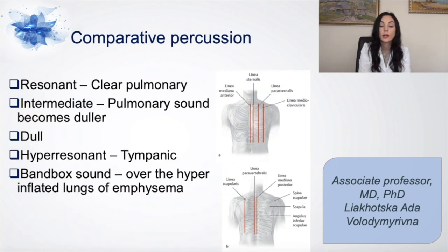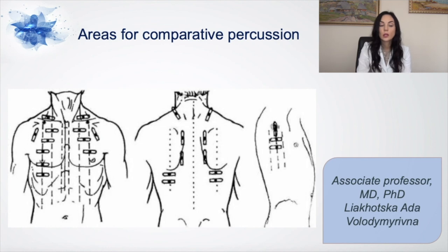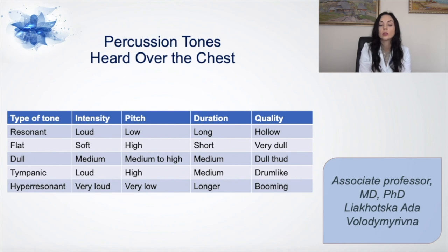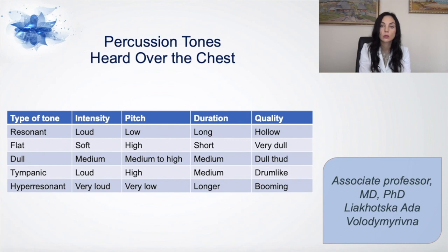Comparative percussion sounds: resonant clear pulmonary sound, intermediate pulmonary sound — somewhat duller — dull sound, and hyper-resonant tympanical sound — a band-box sound over the hyperinflated lungs of emphysema. Please look at the areas for comparative percussion and how to place your finger and knock. Percussion tones heard over the chest should be characterized by their intensity, pitch, duration, and quality. Resonant type: loud, low-pitched, long duration, hollow quality. Flat type: soft intensity, high pitch, short duration, very dull. Dull sound: medium intensity, medium to high pitch, medium duration, dull quality. Tympanic and hyper-resonant characteristics can also be seen in the picture.